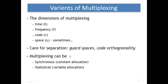Multiplexing can be synchronous or statistical. Synchronous is nothing but constant allocation — a constant number of inputs is provided for the system on the transmission side, and constant data is received and processed on the receiver side. Statistical means variable allocation — the number of inputs and outputs is not constant; it varies depending upon bandwidth, application, system requirements, etc.